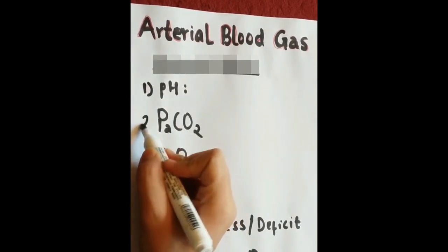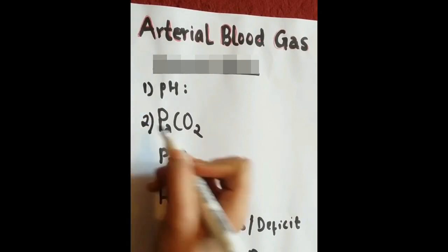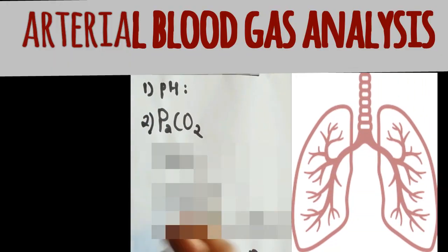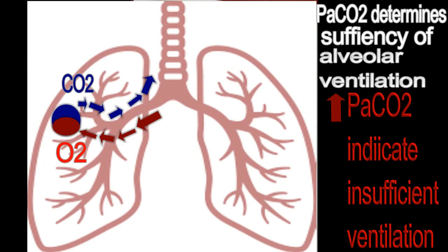Second is PaCO2, that is partial pressure of carbon dioxide within arterial blood. Its value helps us to know the sufficiency of alveolar ventilation within lungs.